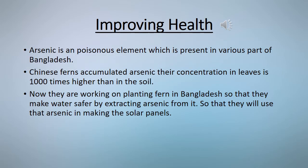In many parts of Bangladesh the water is contaminated with arsenic, which is a very poisonous element. Over time it can accumulate in people's bodies and cause serious health problems. Chinese ferns accumulate arsenic — the concentration in their leaves can be hundreds of times higher than in the soil.